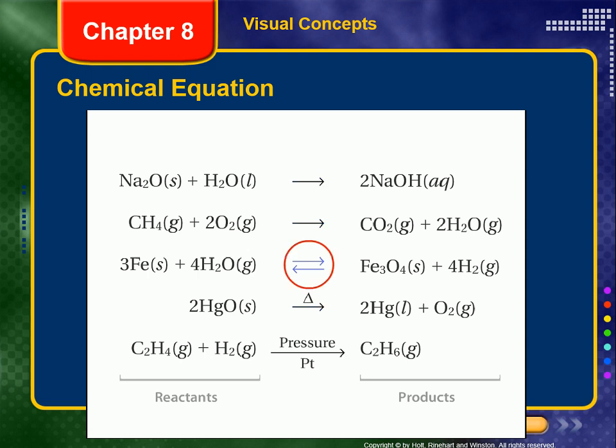AQ stands for aqueous and indicates that the substance is dissolved in water. Products and reactants are separated by an arrow indicating the direction of the reaction. If arrows point in both directions, the reaction is reversible — the products of this reaction can undergo another reaction that turns them back into the starting materials. If something is required to make the reaction progress, such as heat, pressure, or a catalyst, it is shown over or under the arrow.